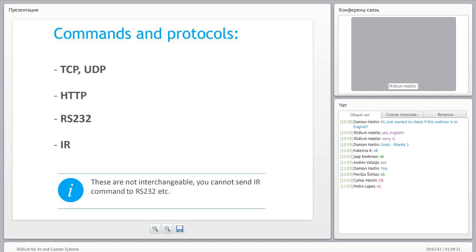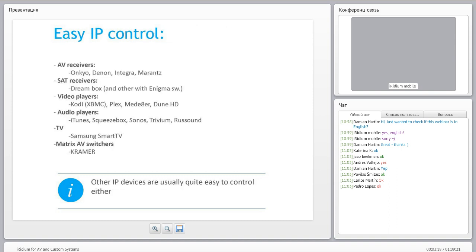The kinds of commands we can use are TCP/IP, UDP, HTTP, RS-232, and IR. Note that these commands are usually not interchangeable — if you know infrared control for a device that also has RS-232 and IP connection, the same string or sequence used for infrared or RS-232 will not work for TCP/IP. We now have easy IP control for many devices.